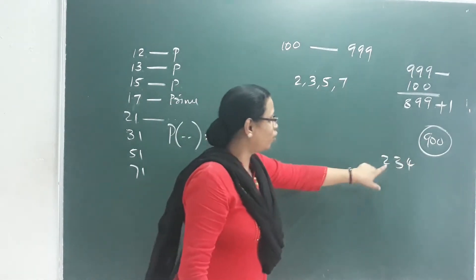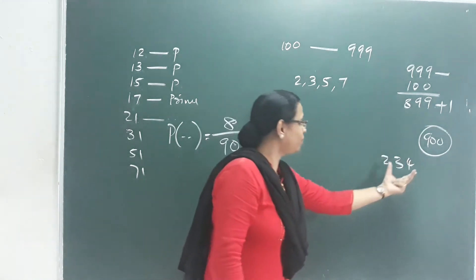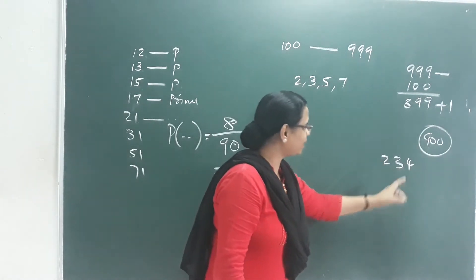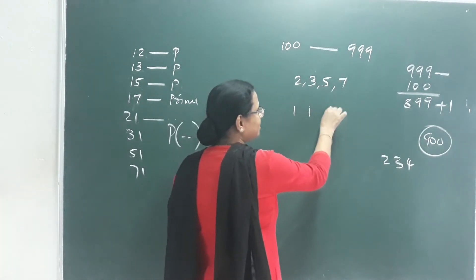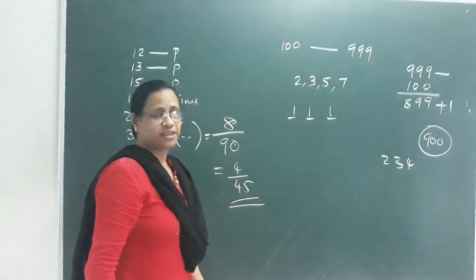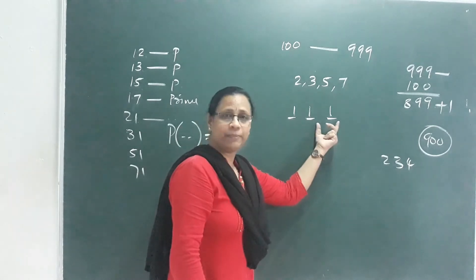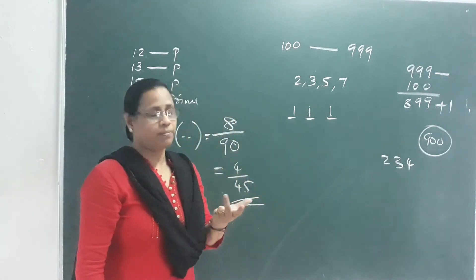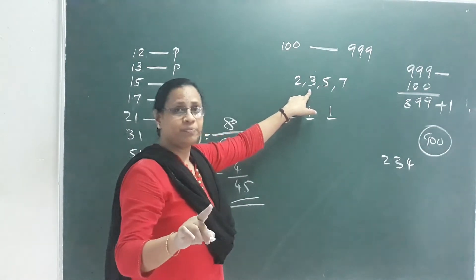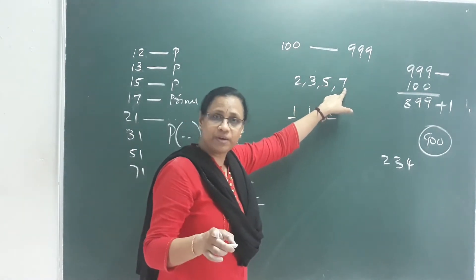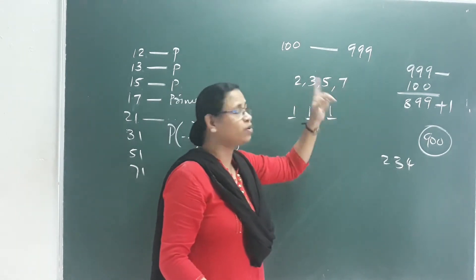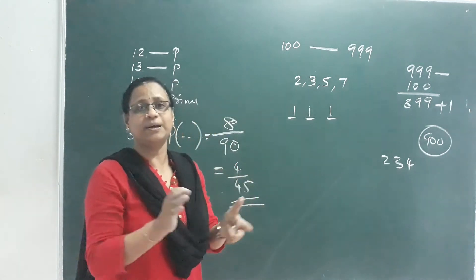A three-digit number has three places: the ones place, the tens place, and the hundreds place. For the digit product to be prime, two of the digits must be 1, and one digit must be a prime (2, 3, 5, or 7). We find the combinations of placing 1s in two of the three positions.